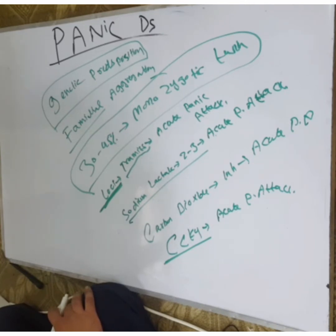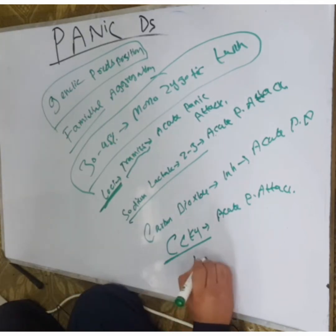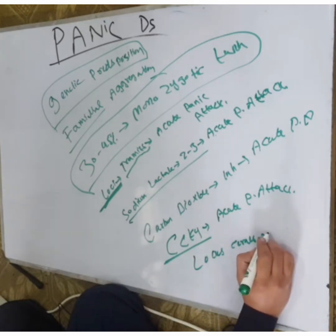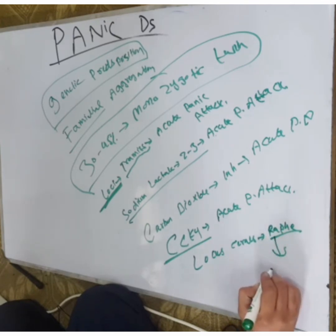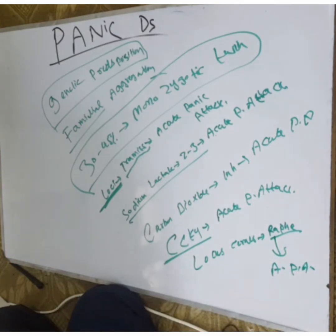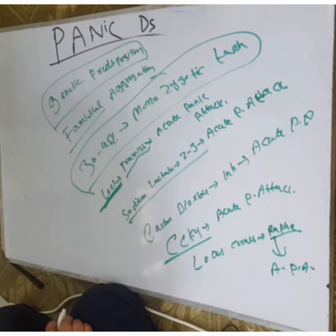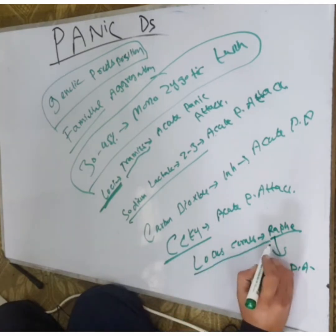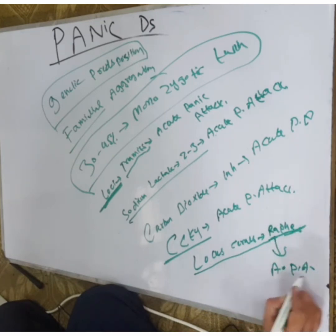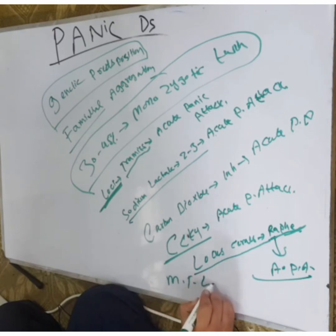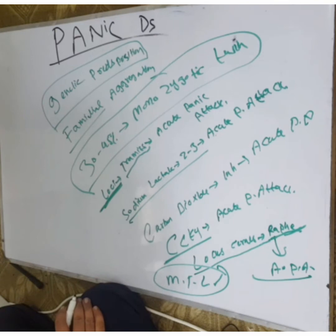According to this hypothesis, stimulation of the locus coeruleus activates the raphe nucleus. When the raphe nucleus is activated, this can cause an acute panic attack. This also leads to medial temporal lobe abnormalities, with greater activation occurring when locus coeruleus stimulation takes place. However, this is a hypothesis, not a confirmed mechanism.